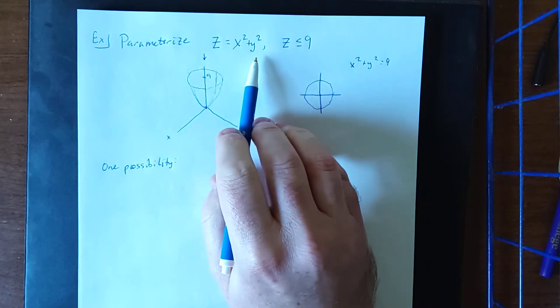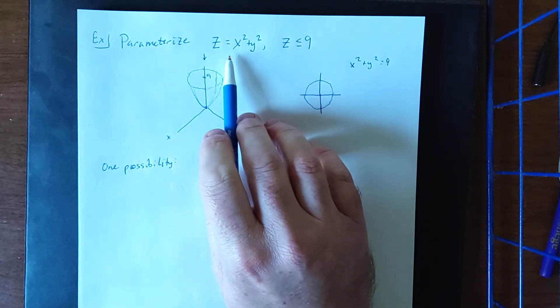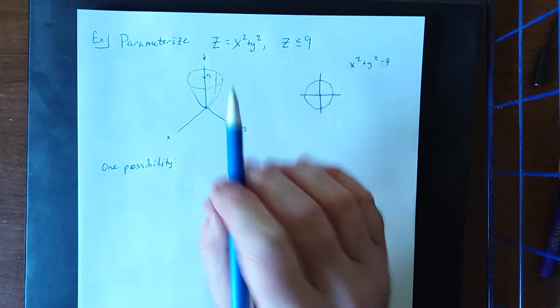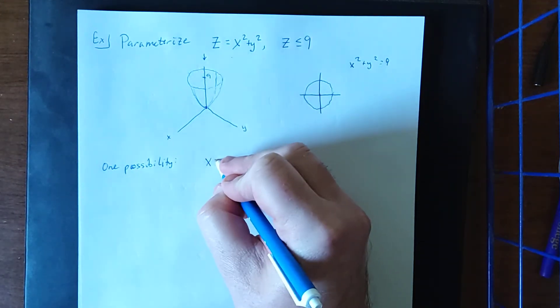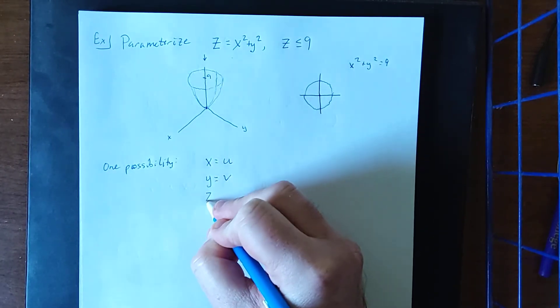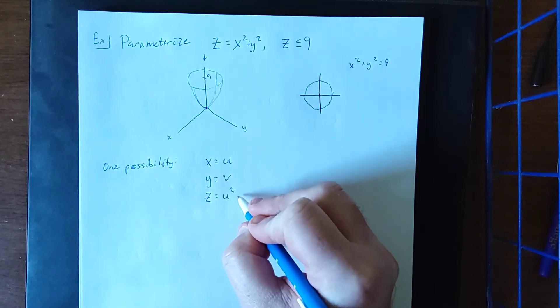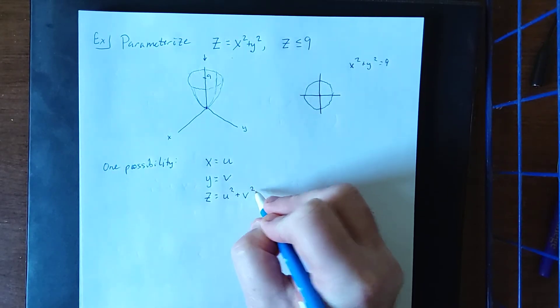Because z is defined as a function of x and y, what we could do is simply do a straight parameterization where x is u and y is v and go from there. So x equals u, y equals v, therefore plugging in these two parametrizations z would be simply u squared plus v squared.